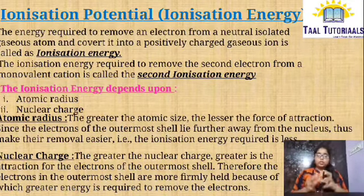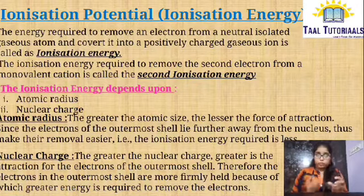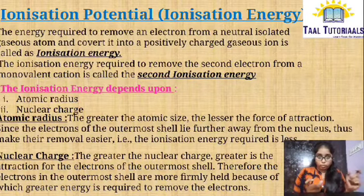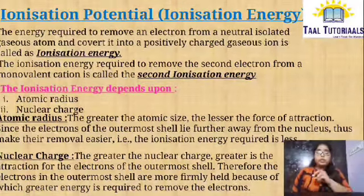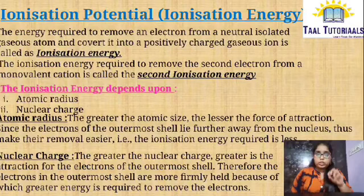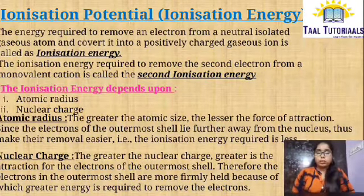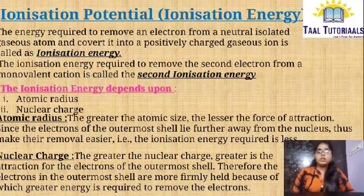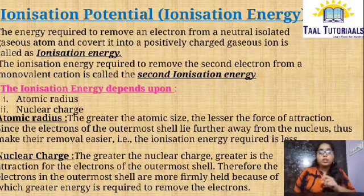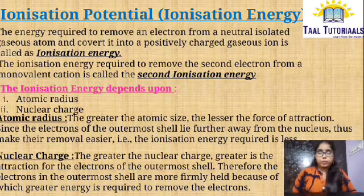The nuclear pull will be more between the nucleus and the outermost electron, meaning more energy is required to remove the outermost electrons. So Ionization Energy depends on two things: atomic radius and nuclear charge.